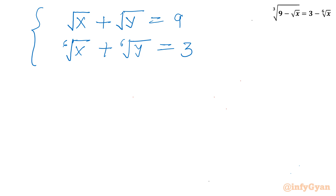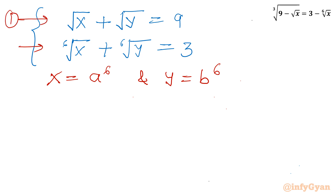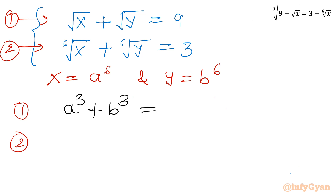Now I will consider a straightforward substitution. Let us put x equal to a to the power 6, and y equal to b to the power 6. Writing both equations after substitution: square root x becomes a cubed, square root y becomes b cubed, giving equation 1 as a cubed plus b cubed equal to 9. The 6th root of x becomes a, and 6th root of y becomes b, giving equation 2 as a plus b equal to 3.